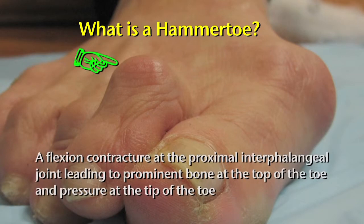A hammer toe results when there is a flexion contracture at the proximal interphalangeal joint. This leads to prominent bone at the joint on top of the toe and can also lead to pressure at the tip of the toe.